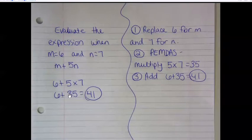Our order of operations, or PEMDAS, tells us that we need to do the multiplying first. So 5 times 7 is 35, and then finally do the addition. 6 plus 35 is 41.